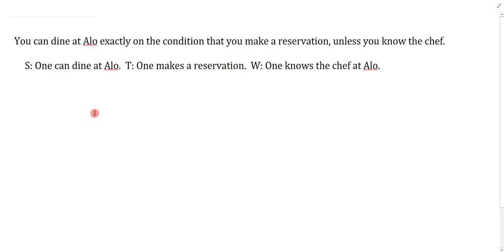You can dine at Allo exactly on the condition that you make a reservation unless you know the chef. Exactly on the condition that—that's a key indicator for a biconditional. Unless is an important word.